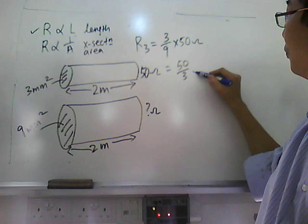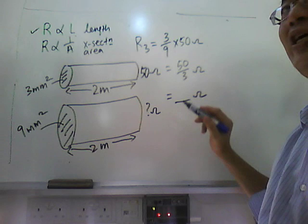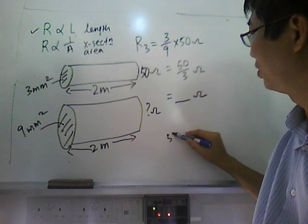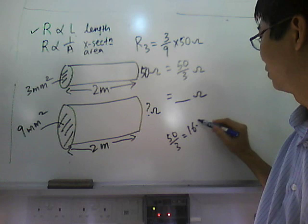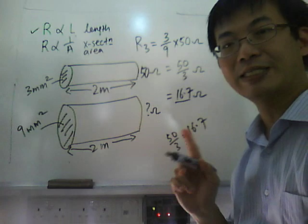Which is 1 third of the resistance. 50 divided by 3. What do you get? 50 divided by 3, 5 divided by 3 is 16. You have good mental calculation capabilities.